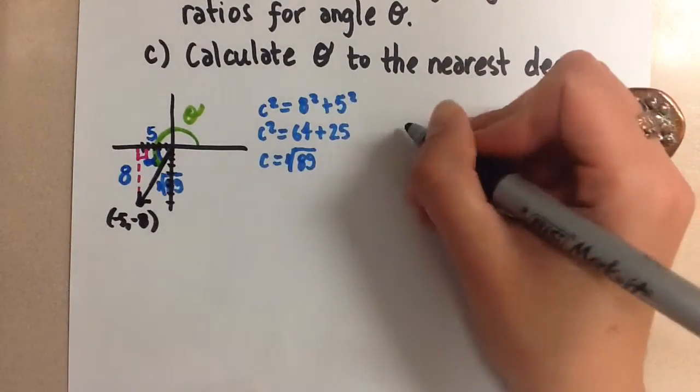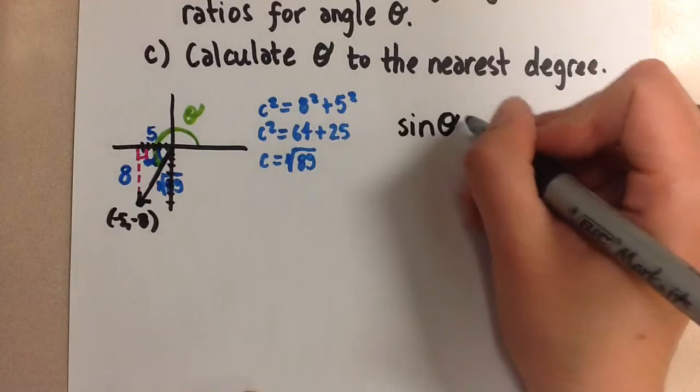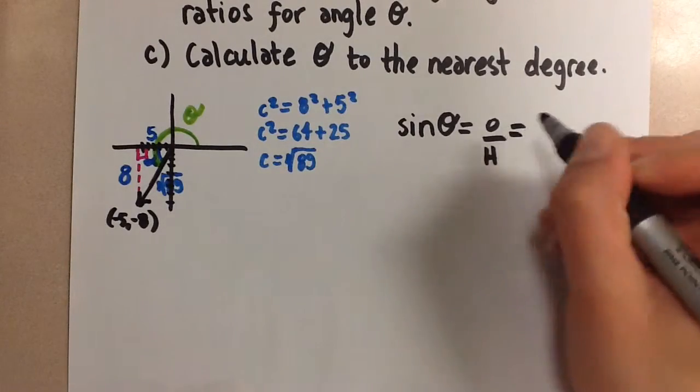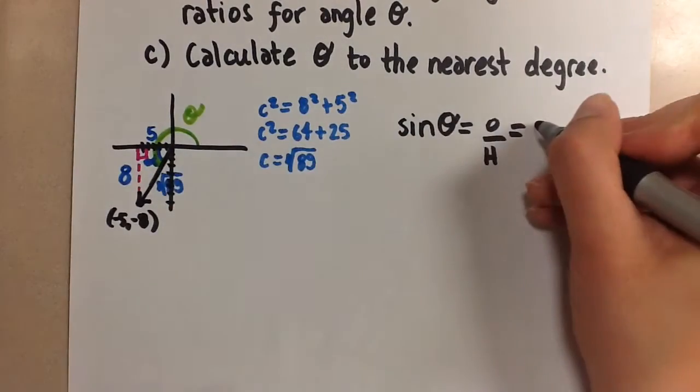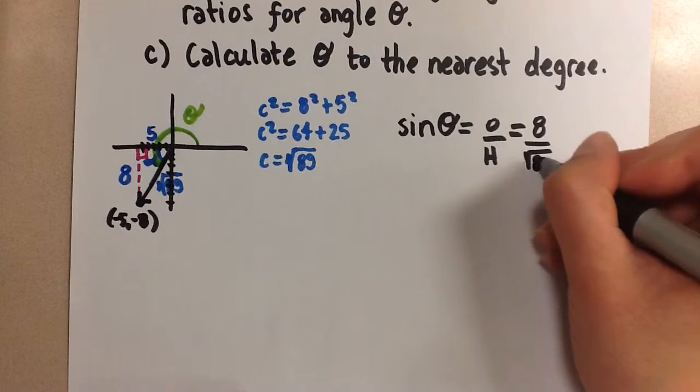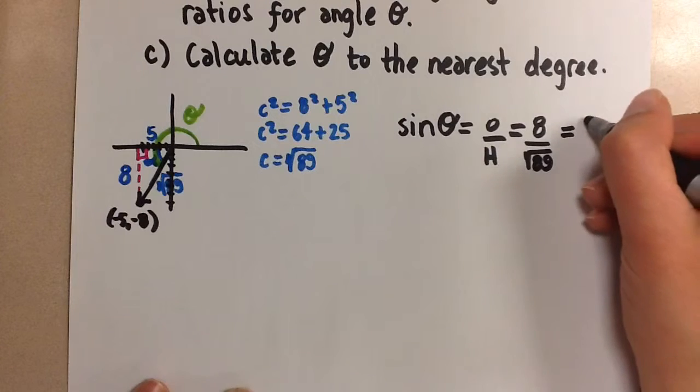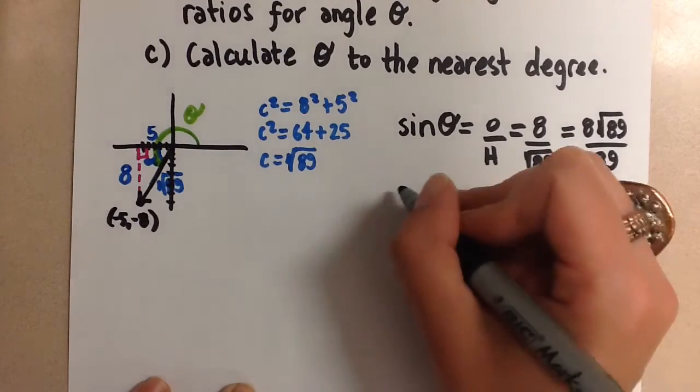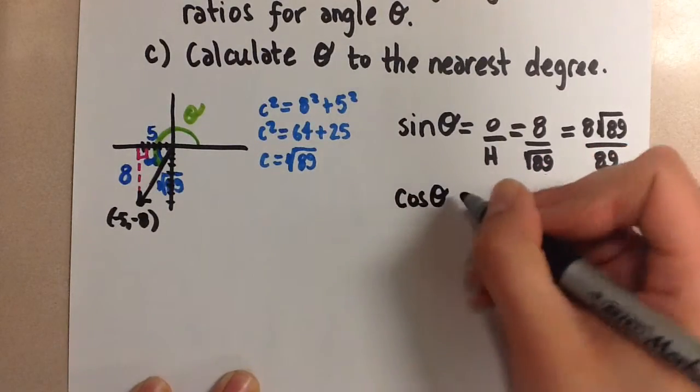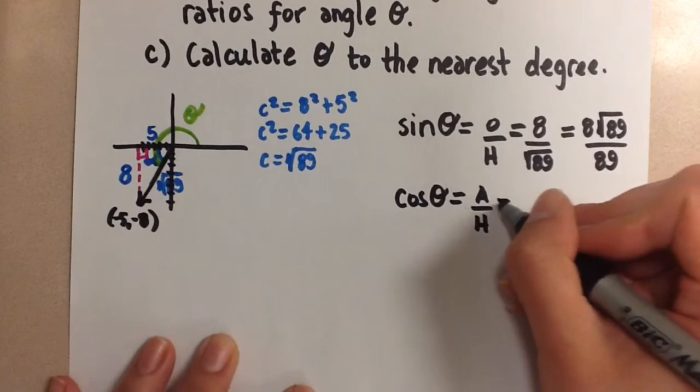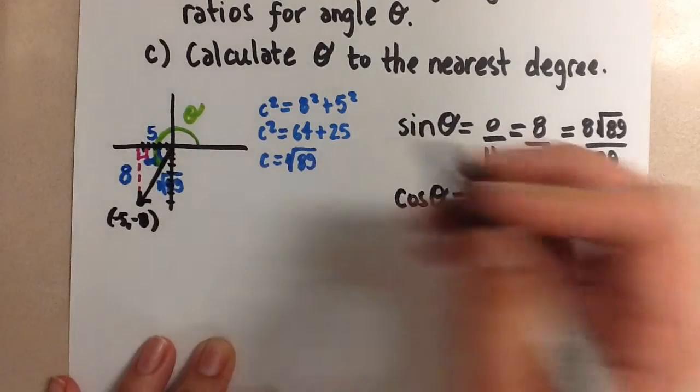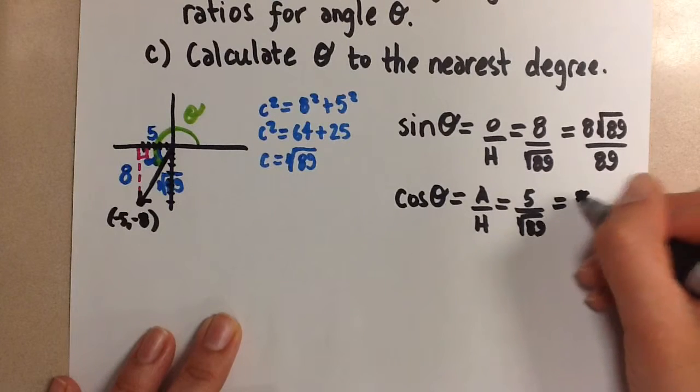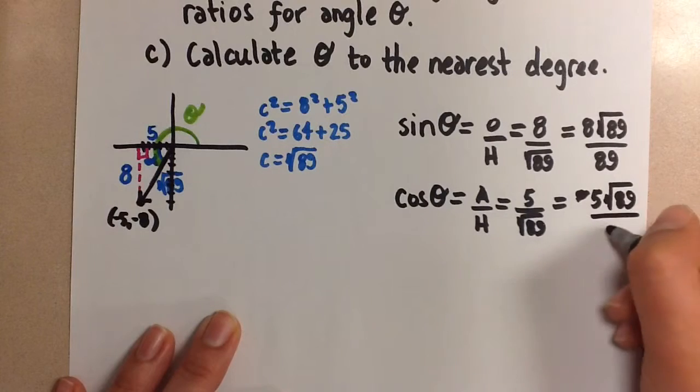So we use that triangle to help us come up with these. The first trig ratio, sine theta, is equal to opposite over hypotenuse. And so according to this, the opposite side is 8, and the hypotenuse is square root of 89. If you want to rationalize that denominator, you'll get 8 root 89 over 89. Then we do the cosine ratio. So cosine theta is going to be adjacent over hypotenuse. The adjacent side is 5. The hypotenuse is root 89. Again, if you want to rationalize this, we're going to do 5 root 89 over 89.